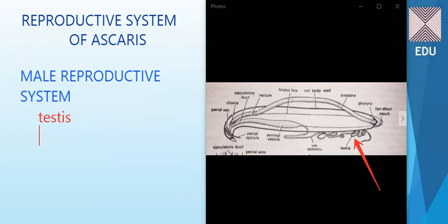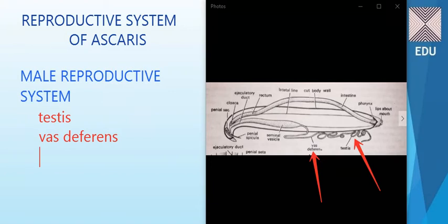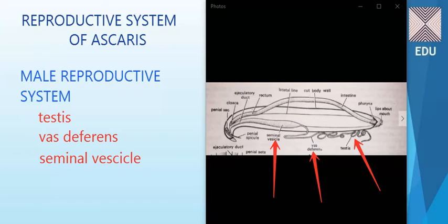The second part is the vas deferens, which is a tube-like structure. It carries the sperms to the next part of the reproductive system, which is the seminal vesicle. The seminal vesicle is responsible for storing the sperms. So the sperms coming out of the testis through the vas deferens are stored in the seminal vesicle.